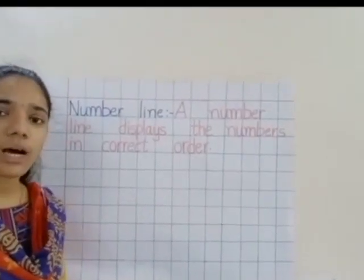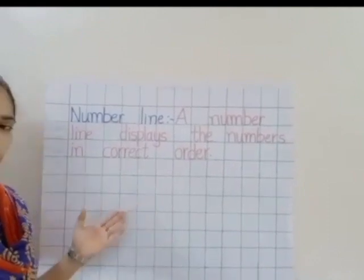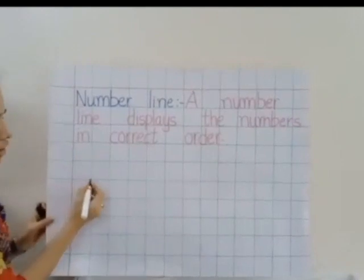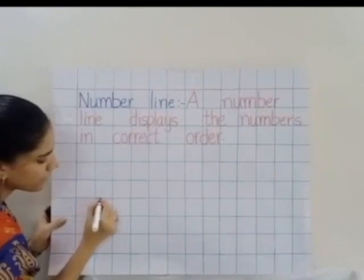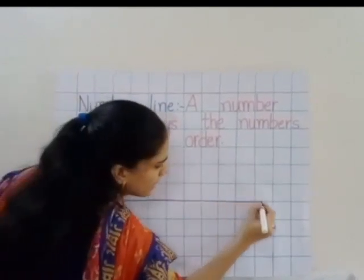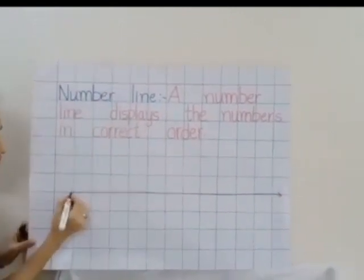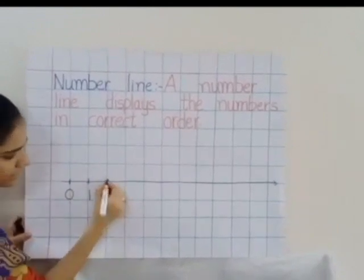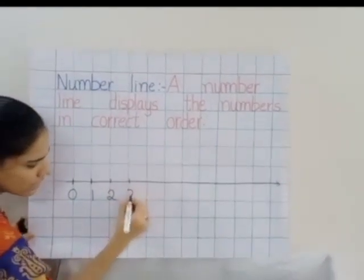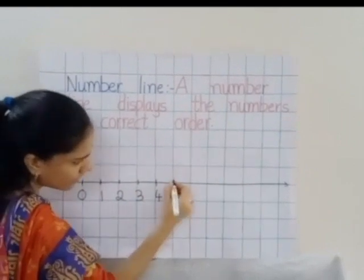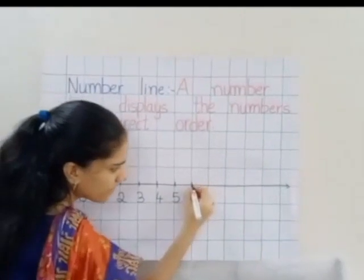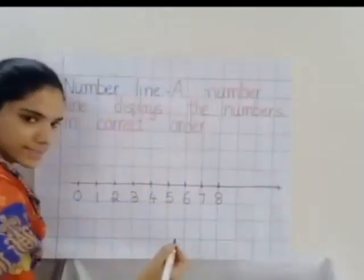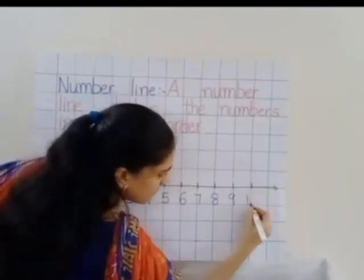Okay children, now I will show you how to draw a number line in your notebook. This is how your math notebook will look like. You have to draw on the line only children. Draw a straight line like this. Now in each box you have to write the numbers. Here you go: 0, 1, 2, 3, 4, 5, 6, 7, 8, 9, 10.